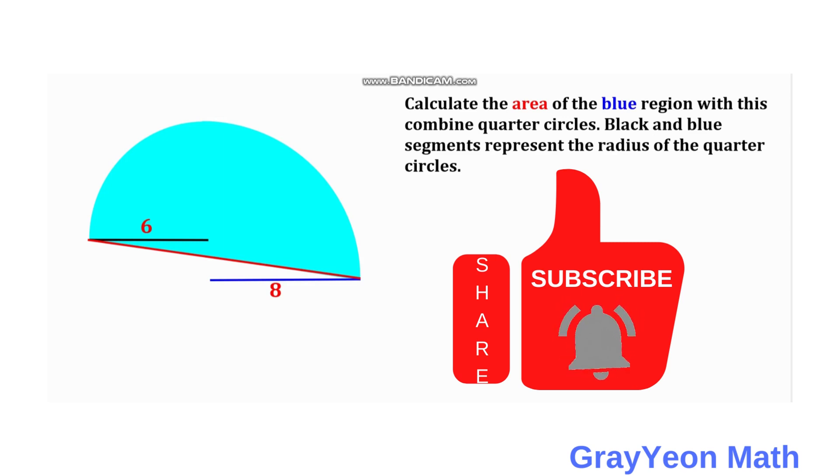Welcome to GrayYeon Math. We are asked to solve this problem. We have two quarter circles, and each corner of these quarter circles are connected by a line, and we are required to find the area of the blue region.